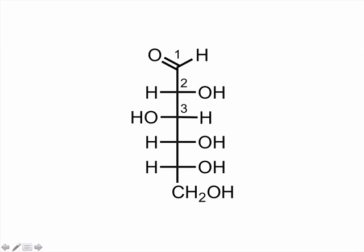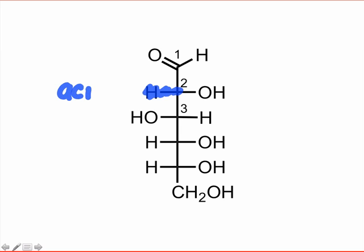However, in this webcast, I'd like to focus on a different possibility. You might imagine that the position alpha to the carbonyl group of open-chain sugars, often called C2 or carbon-2, is an acidic position.